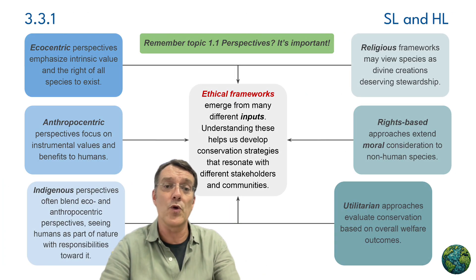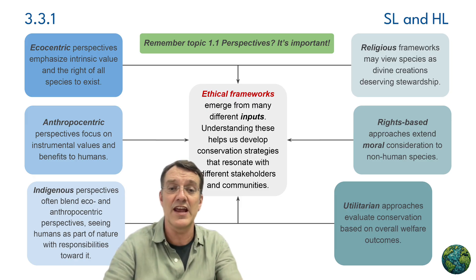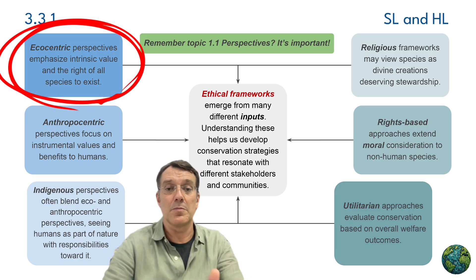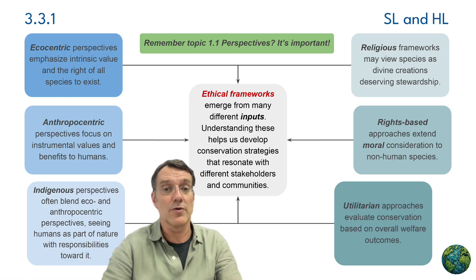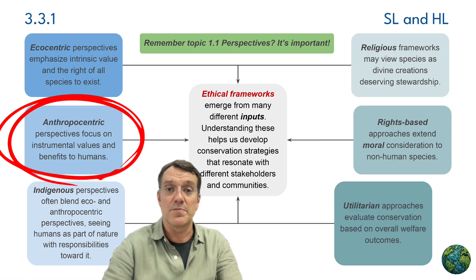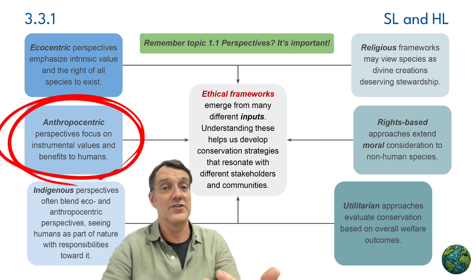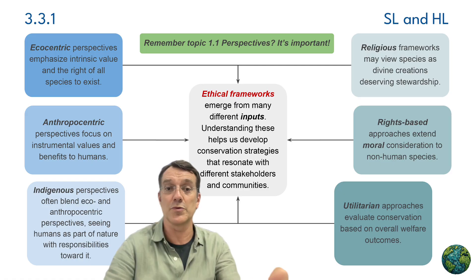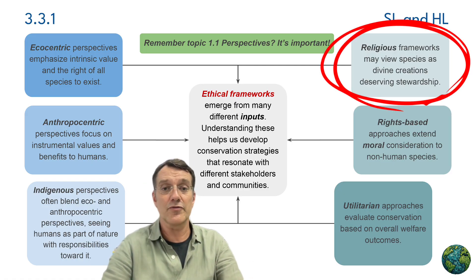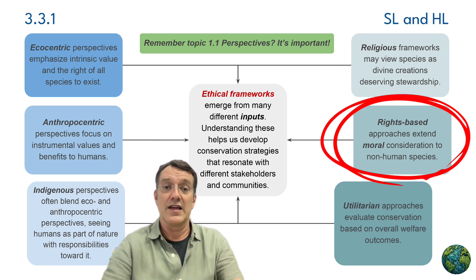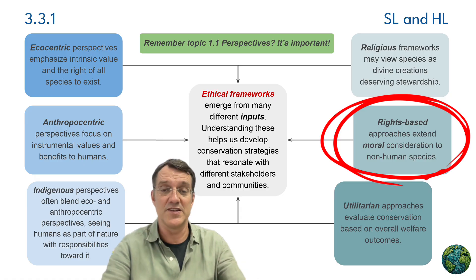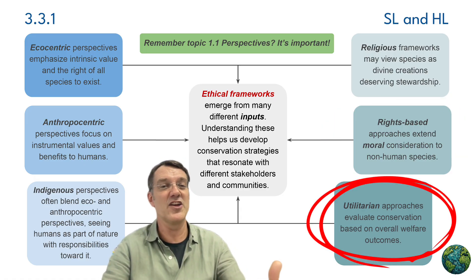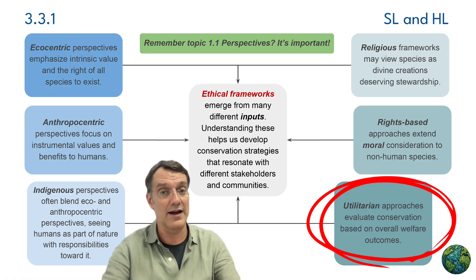Understanding different ethical frameworks helps us develop conservation strategies that resonate with different stakeholders and communities. Ecocentric perspectives emphasize intrinsic value and the right of all species to exist — the bio-rights studied in topic one. Anthropocentric perspectives focus on instrumental values and benefits to humans. Indigenous perspectives often blend these approaches, seeing people as part of nature with responsibilities towards it. Religious frameworks might view species as divine creations deserving stewardship. Rights-based approaches extend moral consideration to non-human species, while utilitarian approaches evaluate conservation based on overall welfare outcomes.